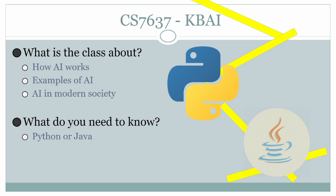This course is the second course I've taken in the OMS CS program and the first summer course I've taken. So what's the class about? The main points of the class are How Does AI Work, Some Examples of AI, and AI in Modern Society.